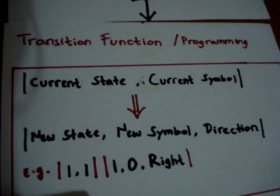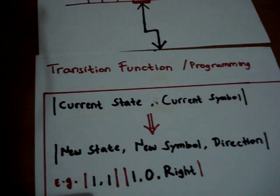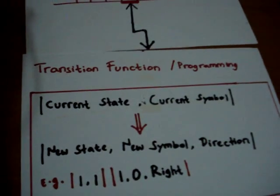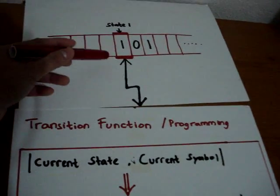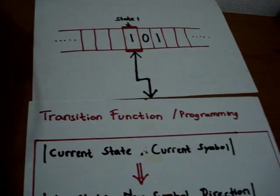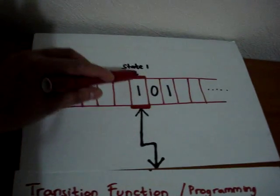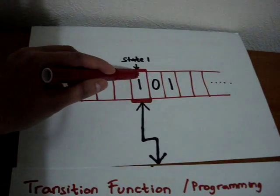Basically, the machine will start in a state, and it's going to read the symbol and go to the transition table. For example, the head is in state one and points to symbol one.